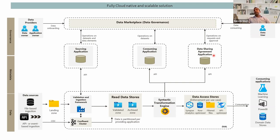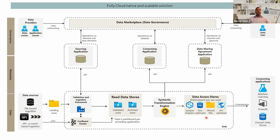Once data is available, you can look into the data marketplace and search it. If you find the data valuable, you request a data sharing agreement saying, 'I want to consume this data.' The data sharing application facilitates the provider and data owner to make a yes or no decision. Once that's done, in the consuming application you register your metadata, and then you get data in different formats. We have a polyglot where data is available in different consumption patterns — whether it's API, Synapse, file, or many more. We provide a lot of flexibility to our consumers in how they want to consume the data.